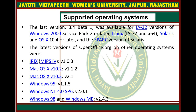Now, Supported Operating Systems. The last version, that is 3.4 Beta 1, was available for IA-32 versions of Windows 2000 Service Pack 2 or later, Linux IA-32 and x64, Solaris, and OS X 10.4 or later, and the SPARC version of Solaris. Other operating systems that had OpenOffice.org versions include IRIX MIPS-IV. Older versions supported Windows 95, Windows NT, Windows 98, and Windows ME, that is version 2.4.3.